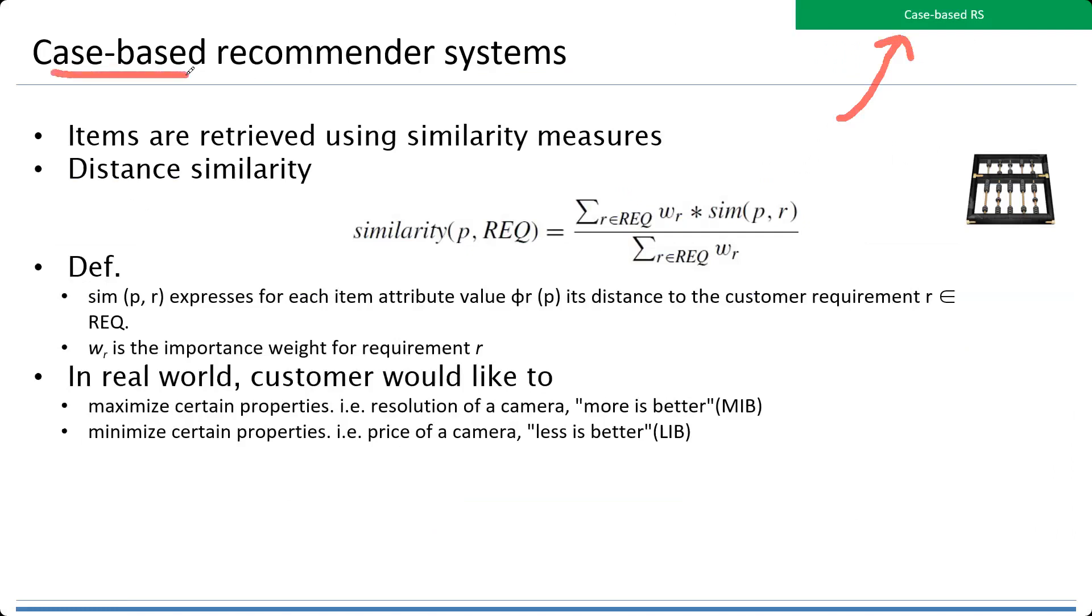The items are retrieved using similarity methods. You already know the similarity methods from the first part: Pearson similarity, cosine similarity, Jaccard similarity, dice similarity. We can use those, and we can also apply a new similarity like this one.